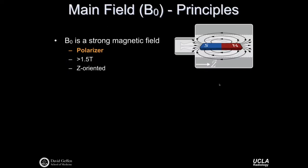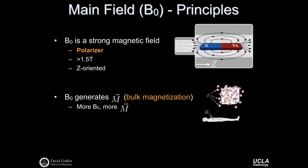The B0 field is a strong magnetic field. On the right-hand side is a cutaway of an MRI scanner. We conventionally assign the z-axis to correspond with the long axis of the scanner, and the magnetic field itself is north-south oriented along that same z-axis. The function of B0 is to serve as the polarizer, preparing individual magnetic dipoles to form coherent bulk magnetization. Typically, the B0 field is greater than 1.5 Tesla for clinical imaging systems, and 3 Tesla systems are very common. The larger the B0 field, the larger the bulk magnetization.